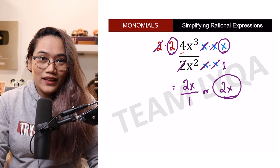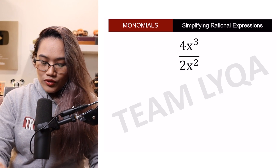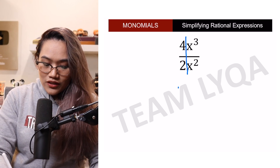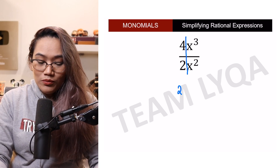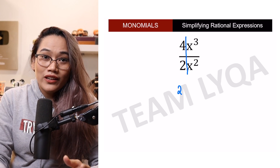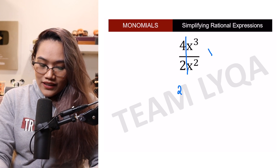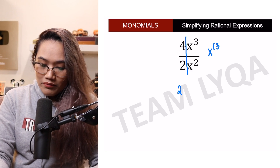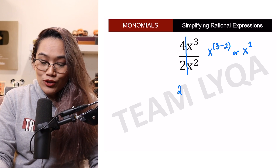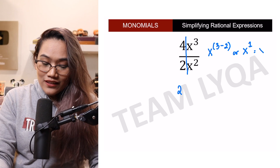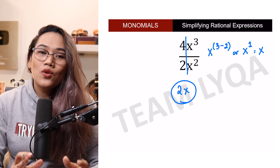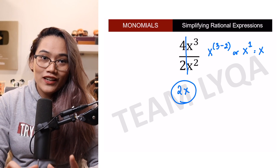Yan yung visual representation ng ginagawa natin. Another way of looking at it would be to just divide this part and this part. 4 over 2 is just 2. And yung x cubed divided by x squared — ang rule natin dyan, and meron tayong video niya on rules of exponents — this could be written as x raised to 3 minus 2, or x raised to 1, which we write as just x. So, 2x. Pareho rin naman yung lalabas na sagot. So kung alin ang method na mas comfortable ka, yun ang gagamitin mo.